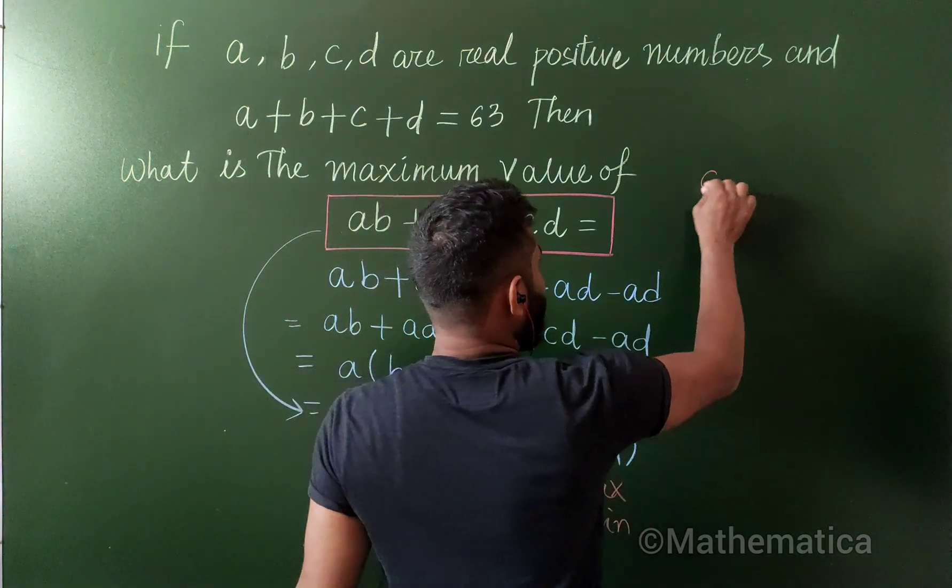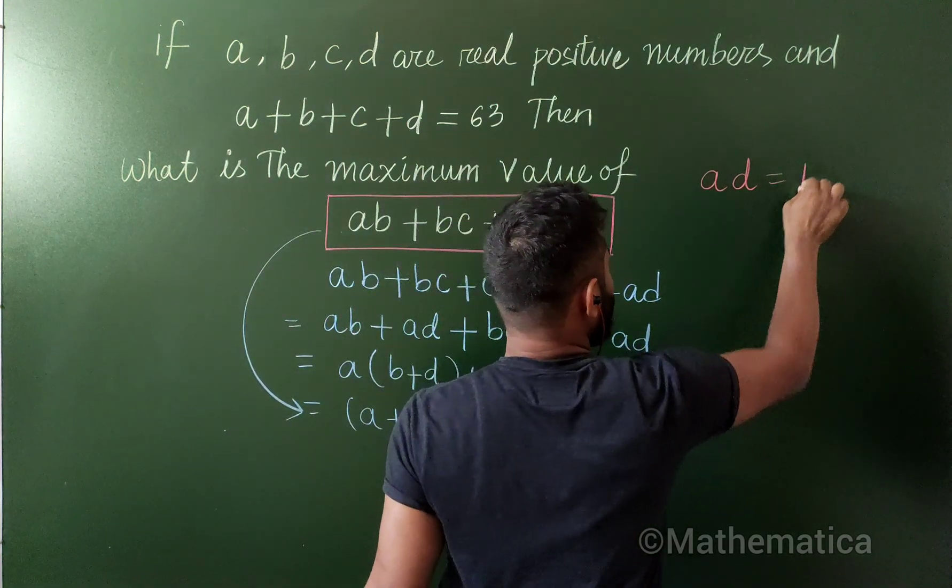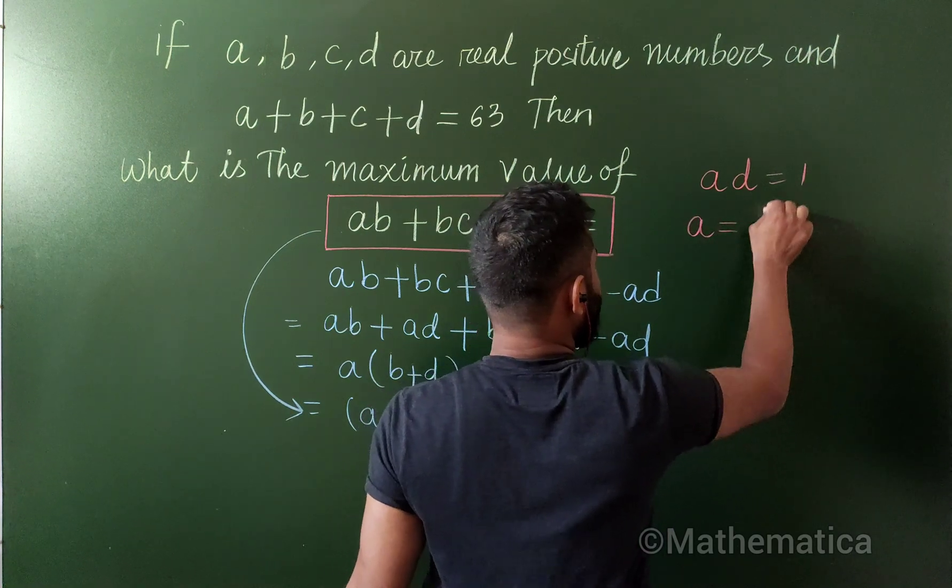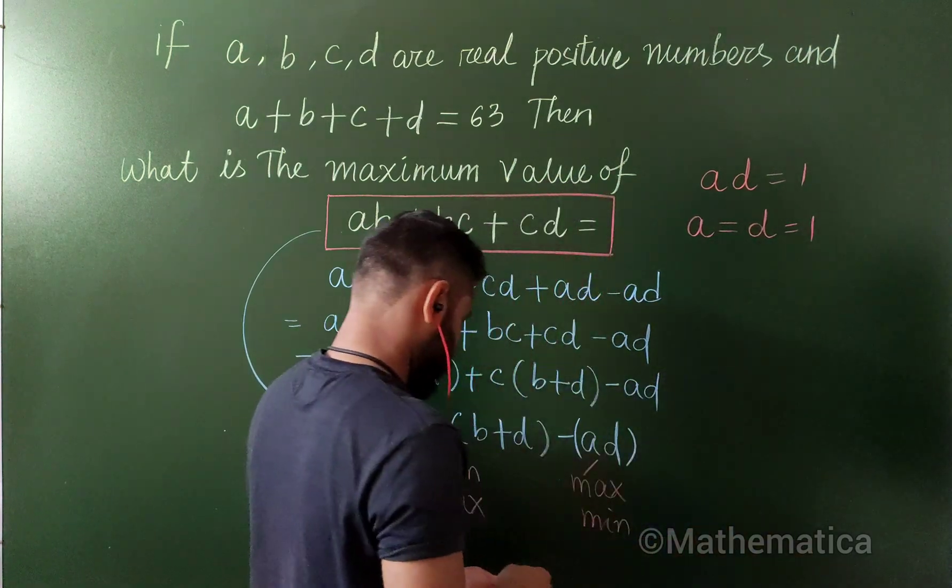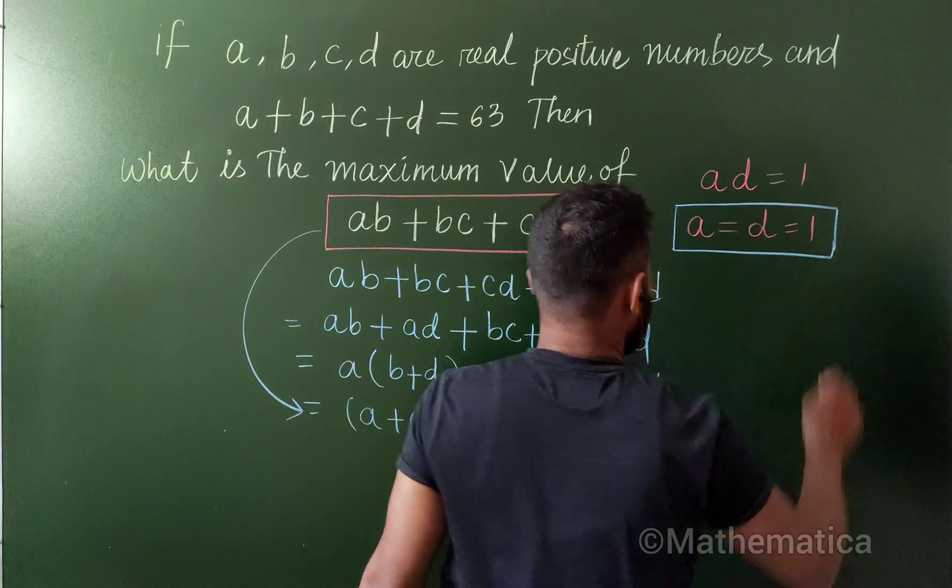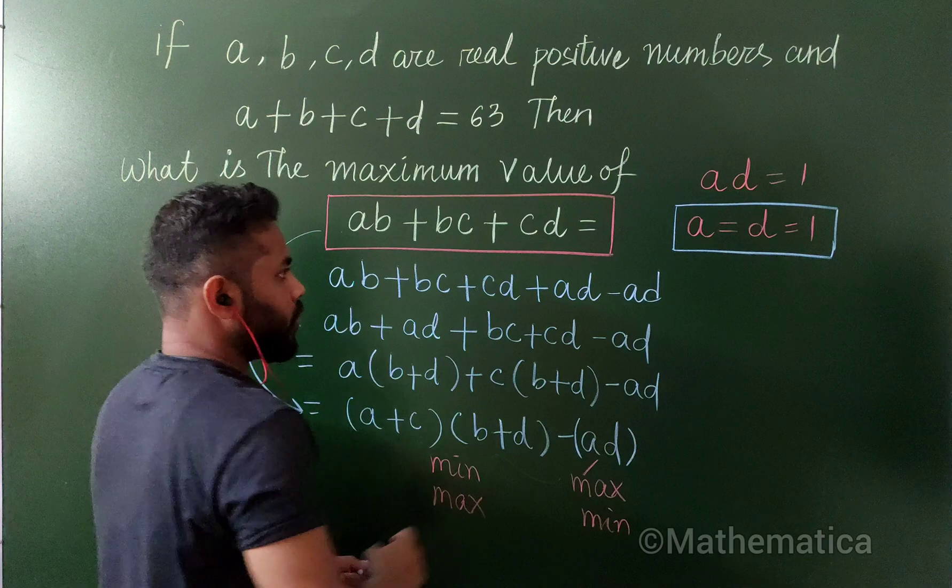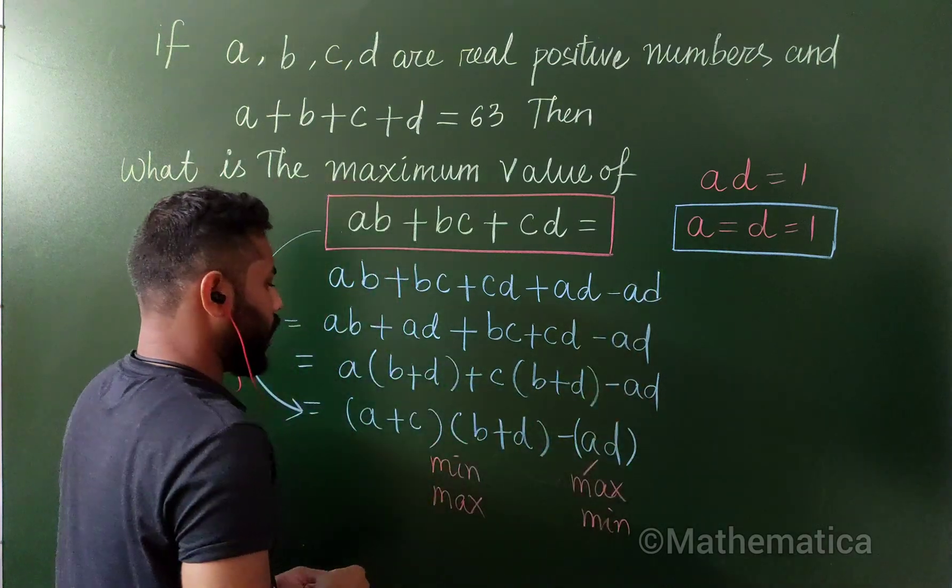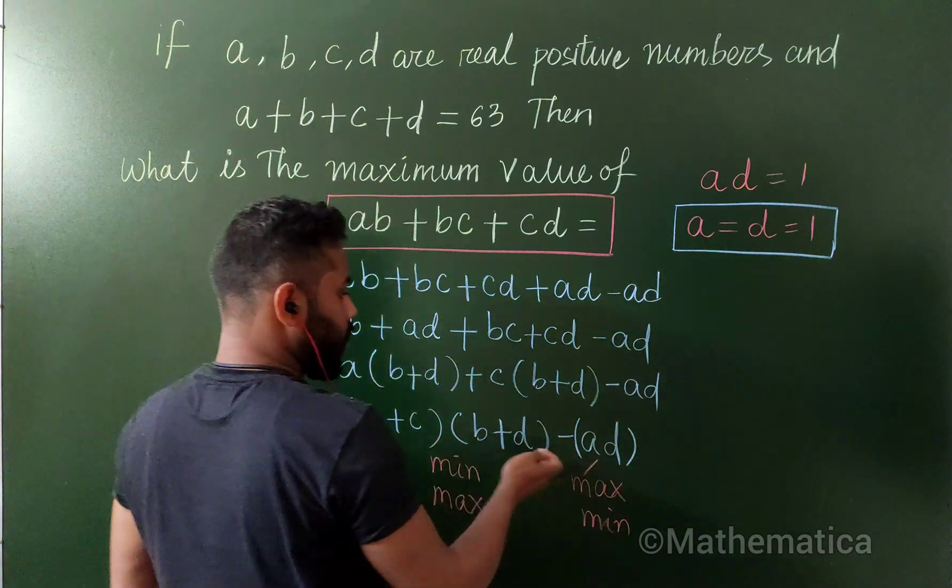So I can write that ad must be one. Therefore both a and d are one. Right. So let's plug this value here. A is one and d is one, this one is one.